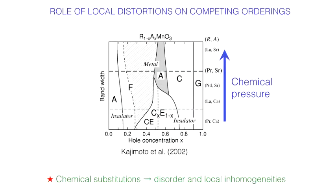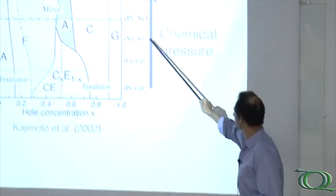The evidence for this is that if you consider various compounds with different substitutions, you have a very complex phase diagram with different competing magnetic structures which are unstable towards temperature changes. The bandwidth is related to the size of the ions.